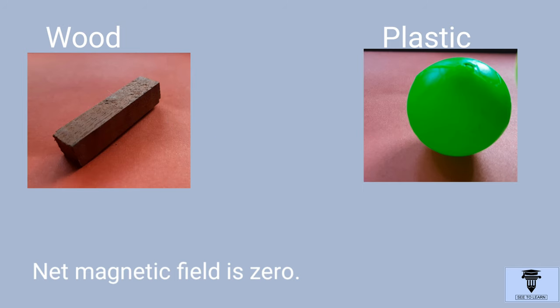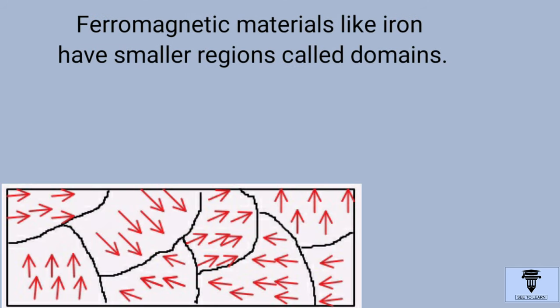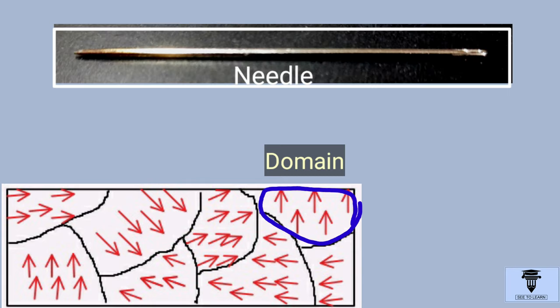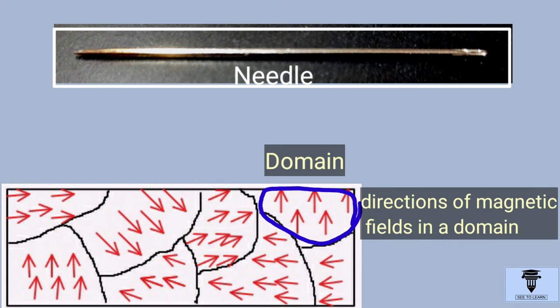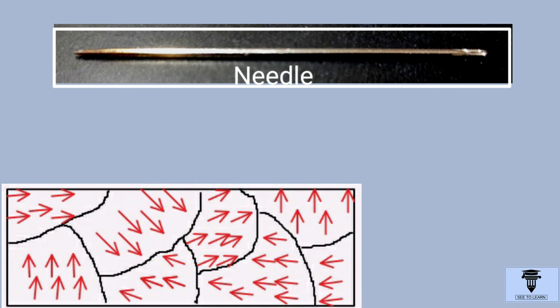However, ferromagnetic materials like iron have smaller regions called domains. Let's take the example of this needle. In each domain, there might be millions of atoms. The direction of the electrons' magnetic fields in a domain is aligned in the same direction. That is, the tiny magnets in a domain point in the same direction. However, all the domains are not aligned.